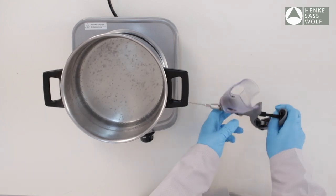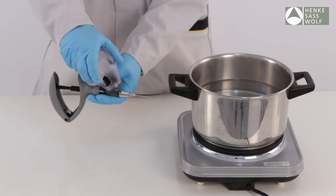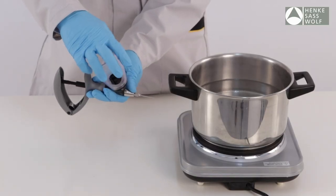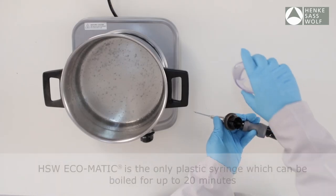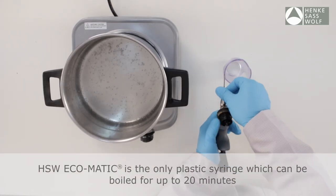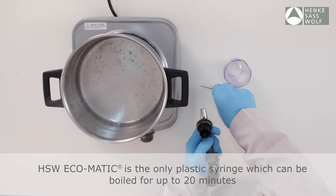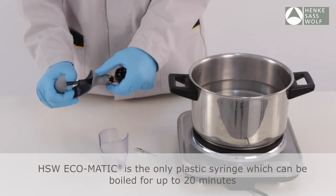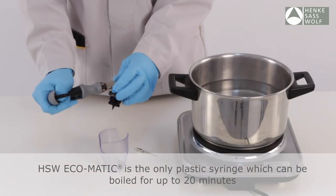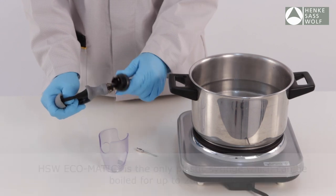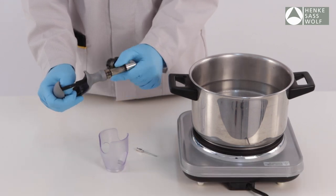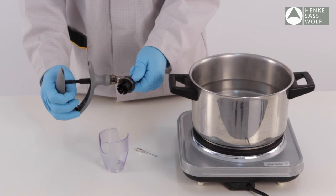It is recommended that the Ecomatic and a supply of needles or nozzles be disinfected before and after each use. Suspend the complete Ecomatic including needles or nozzles in a container of water and boil for up to 20 minutes. Ideally the cylinder will be disassembled from the handle and the syringe will be boiled in a disassembled condition.